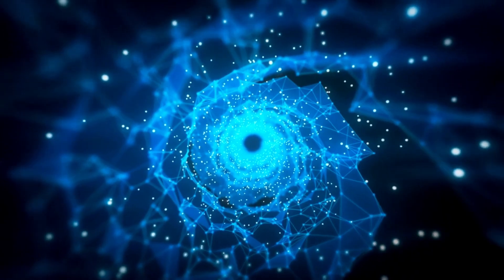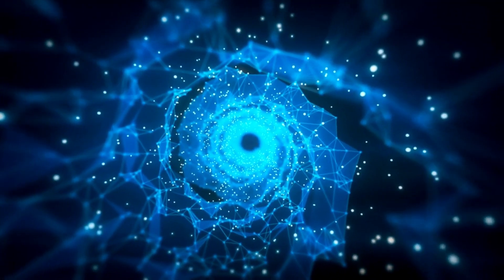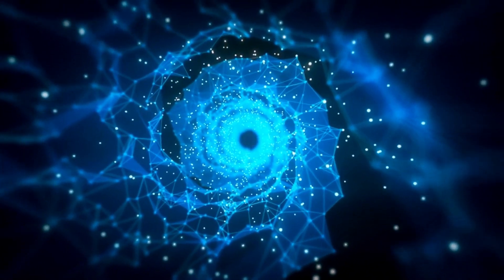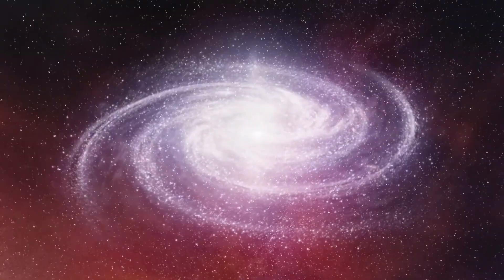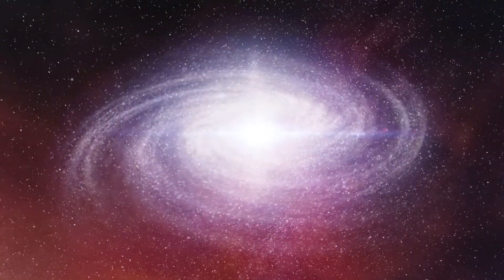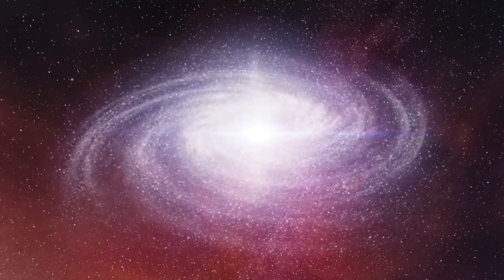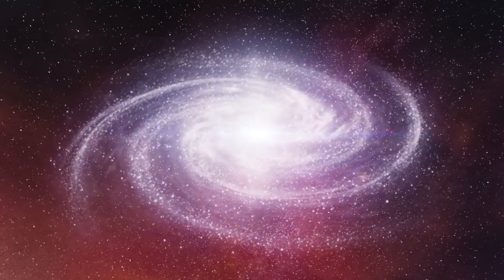Smaller stars, when they die, transform into something called neutron stars, which are super dense but not dense enough to trap light. However, if a star is about three times the mass of our sun, it collapses under its own gravitational pull, forming a black hole.